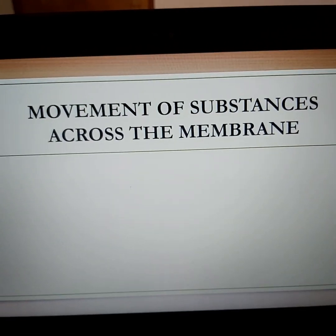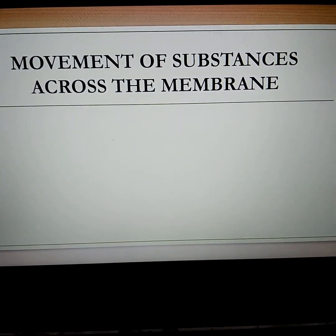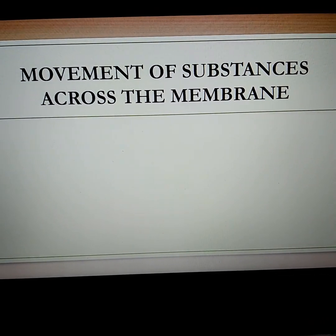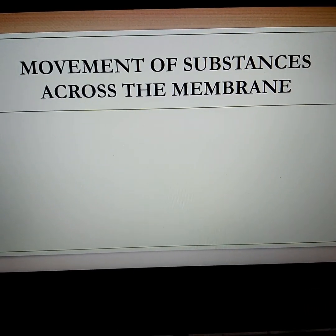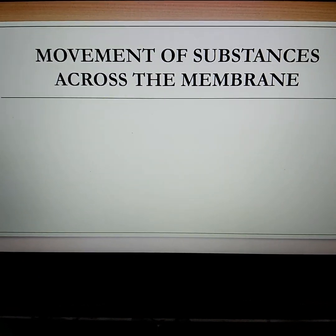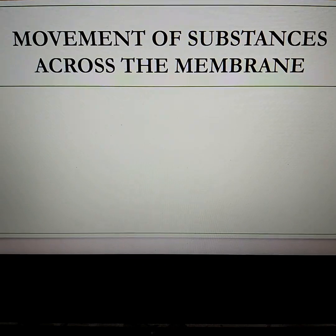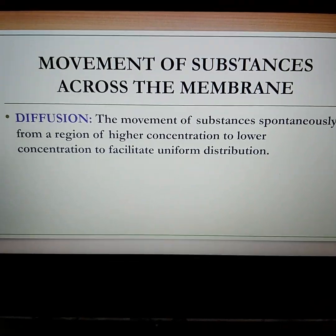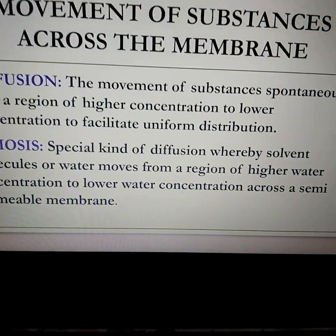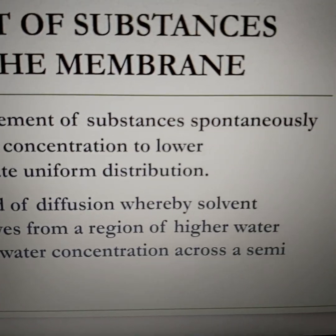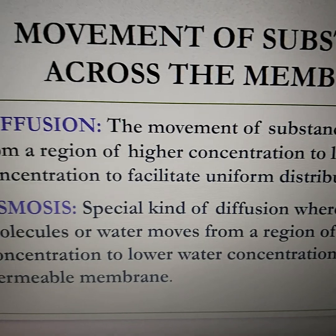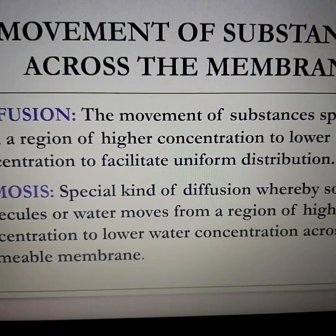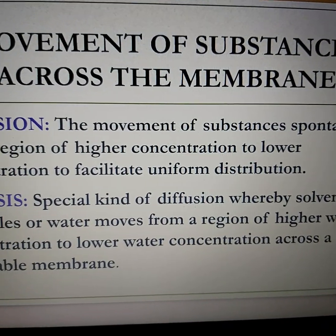Since the membrane has selective permeability, it regulates entry and exit of substances on a selective basis. Movement of substances across the membrane follows two basic principles: the first is the physical phenomenon of diffusion, and the second is osmosis. Diffusion is the movement of substances spontaneously from a region of higher concentration to lower concentration to facilitate uniform distribution.